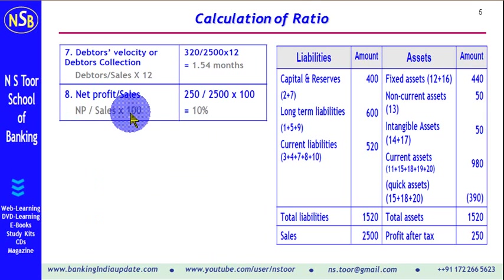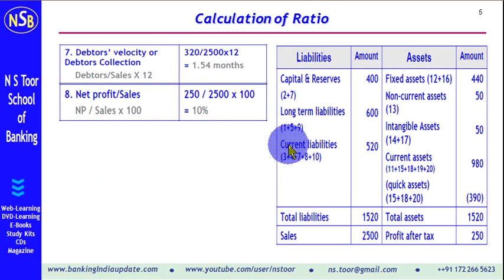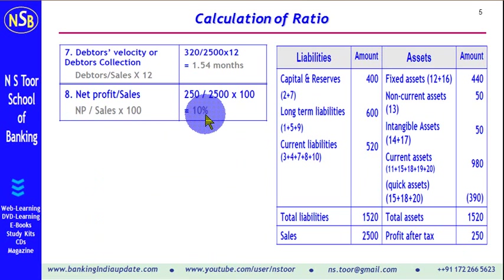Net profit to sales margin is calculated as net profit divided by sales. Net profit is 250 and sales are 2,500, giving a margin of 10%.